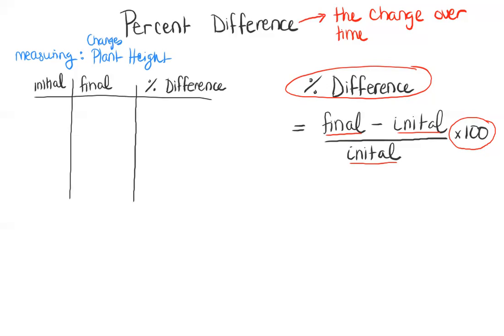So let's say that the plant initially was 12 centimeters and it then grew to becoming 14 centimeters. What is the percent difference? How much did this plant actually grow? In order to do that, we're going to follow the formula.